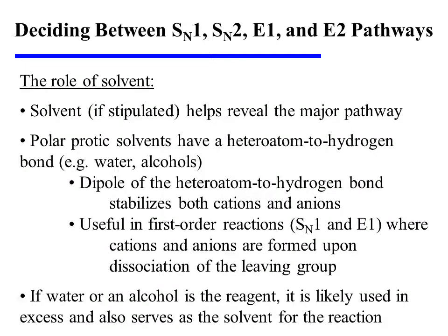The solvent, if it is stipulated, will help to reveal the major pathway. Polar protic solvents have a heteroatom-to-hydrogen bond — water and alcohols would be good examples. The dipole present in this heteroatom-to-hydrogen bond efficiently stabilizes both cations and anions, and therefore such solvents are very helpful in first-order reactions where both cations and anions are formed upon dissociation of the leaving group. If water or an alcohol is the reagent, it is very common to use it in excess, thereby allowing it to do double duty as the solvent for the reaction.